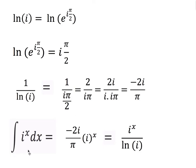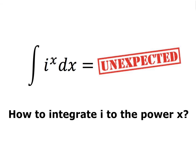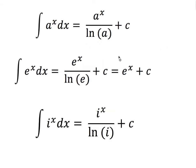I've proved that this rule still holds for this example. The integral of i to the x dx is minus 2i/π times i to the x, and I've shown that is equivalent to i to the x over ln(i). So the rule I guessed at the start — perhaps not entirely unexpected — still works: the integral of something to the power x is that something to the power x over the natural log of that something, and it still holds even with complex numbers.